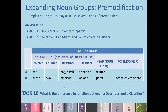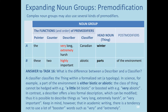The next task asks: what's the difference in function between a describer and a classifier? A classifier classifies a thing within a set. In science, for example, a part of the environment is either biotic or abiotic. The class of thing cannot be hedged with 'a little bit biotic' or boosted with 'very abiotic.' In contrast, a describer offers a less formal description which can be modified — it's possible to describe things as 'very long,' 'extremely harsh,' 'a very important part,' and so forth.